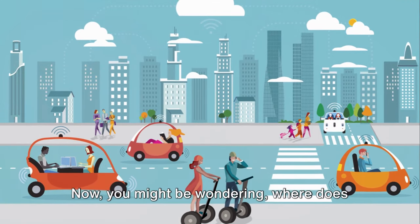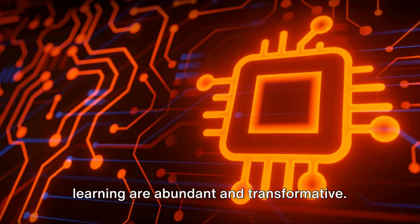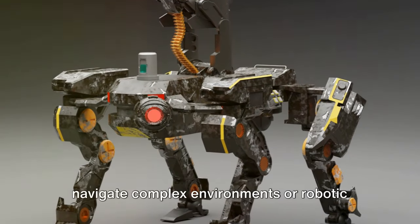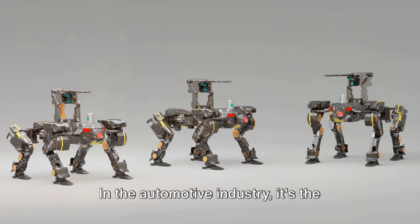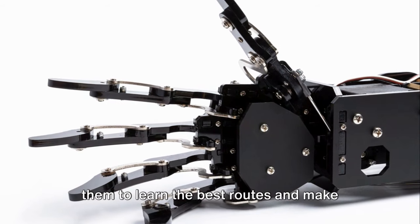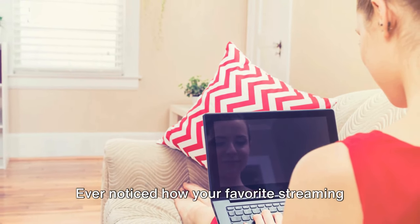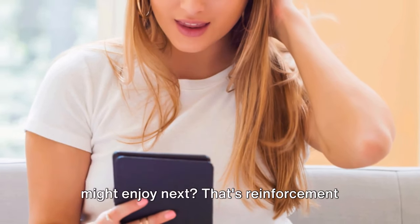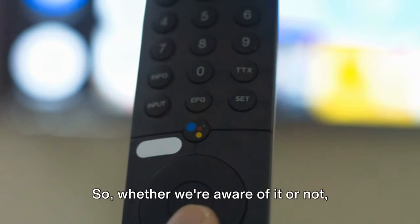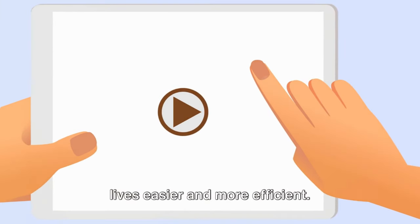Now you might be wondering, where does this come into play in the real world? Well, the applications of reinforcement learning are abundant and transformative. For instance, in the realm of robotics, reinforcement learning helps drones navigate complex environments or robotic arms to perfect their movements. In the automotive industry, it's the magic behind self-driving cars, enabling them to learn the best routes and make safe decisions. Even our leisure time is influenced by these algorithms. Ever noticed how your favorite streaming service seems to know exactly what you might enjoy next? That's reinforcement learning at work, curating a personalized viewing experience just for you. So whether we're aware of it or not, reinforcement learning algorithms are constantly at work around us, making our lives easier and more efficient.